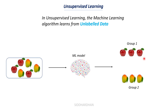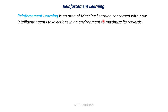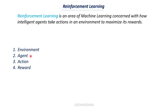The next type is reinforcement learning, which is very different from the other two. Reinforcement learning is an area of machine learning concerned with how intelligent agents take actions in an environment to maximize its reward. When it comes to reinforcement learning there are four main aspects: the environment, the agent, action, and reward.